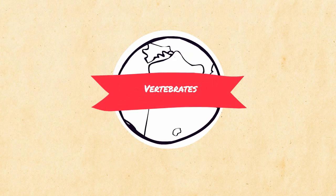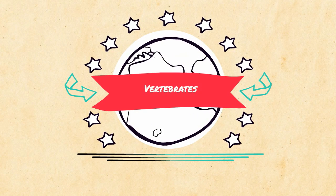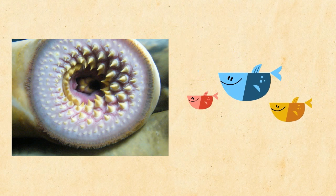Vertebrates on the other hand have a backbone. Examples include the strange fish called lancelets and lampreys, and many other types of fish.